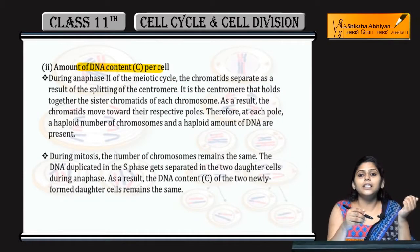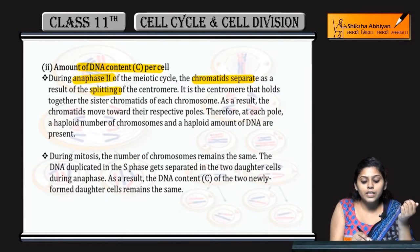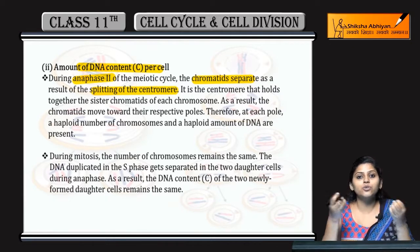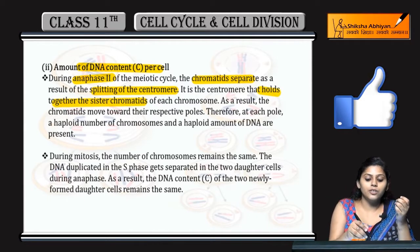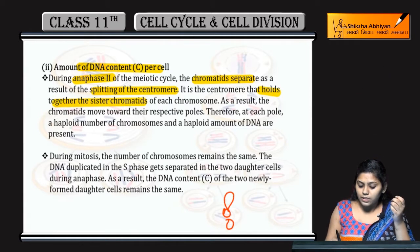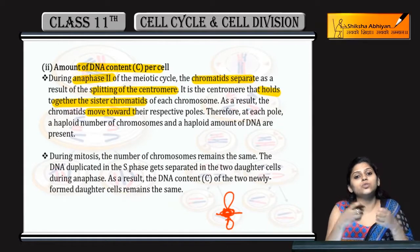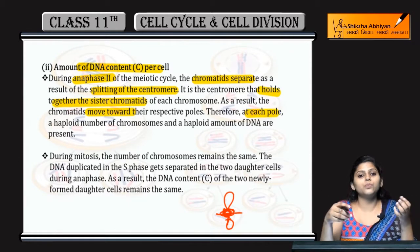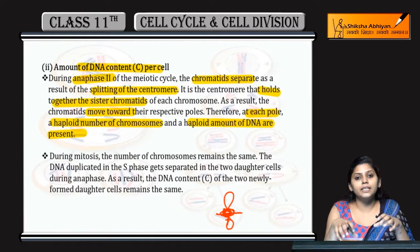Next, DNA content ke liye dekhte hain. Anaphase 2 jo hota hai meiosis ka, usme chromatids separate karte hain as a result of splitting of centromere. Centromere split karta hai jo do sister chromatids ko hold karke rakhta hai. As a result, chromatids move towards their poles and each pole mein haploid number of chromosomes and haploid amount of DNA are present. To DNA content kya hua? Haploid mila sabko.